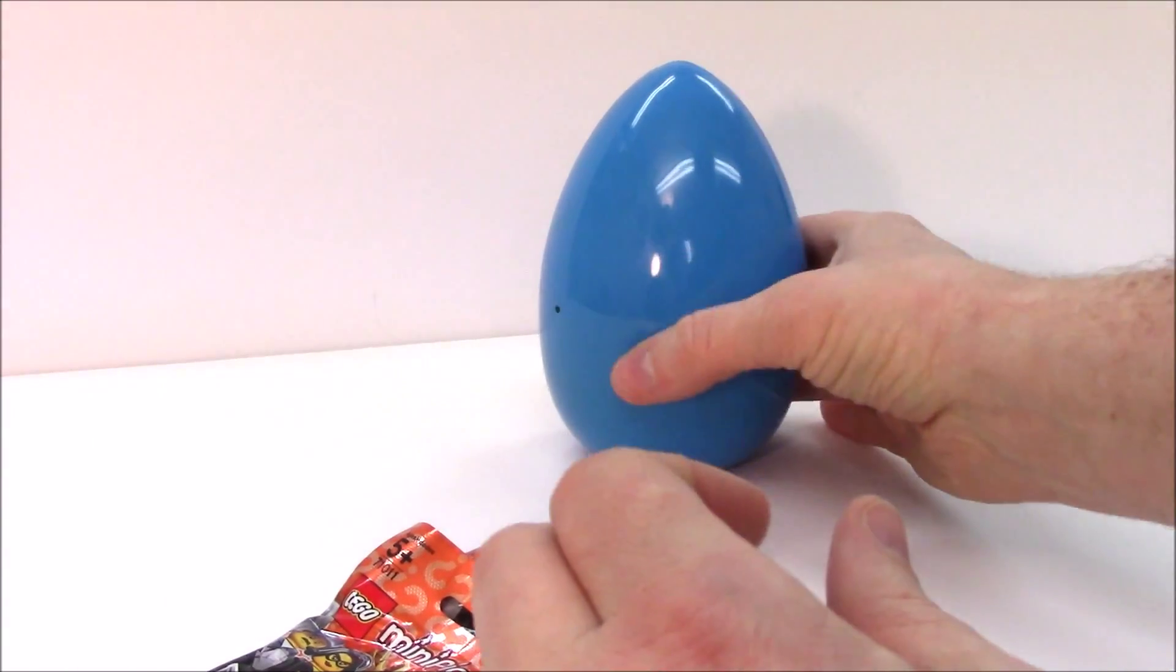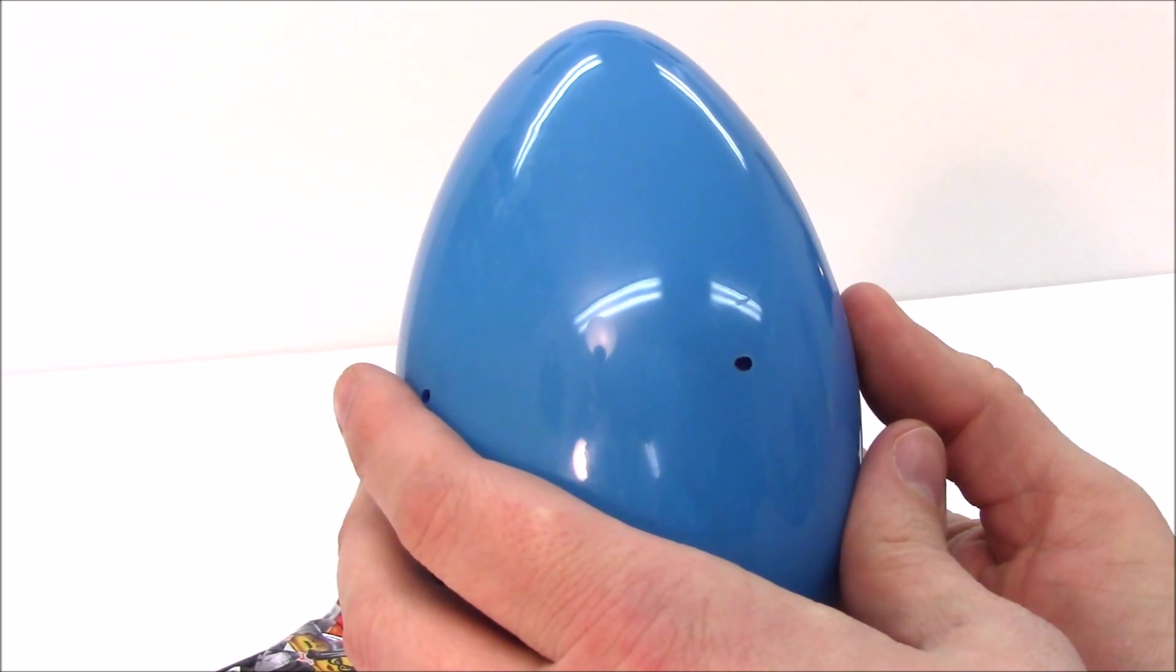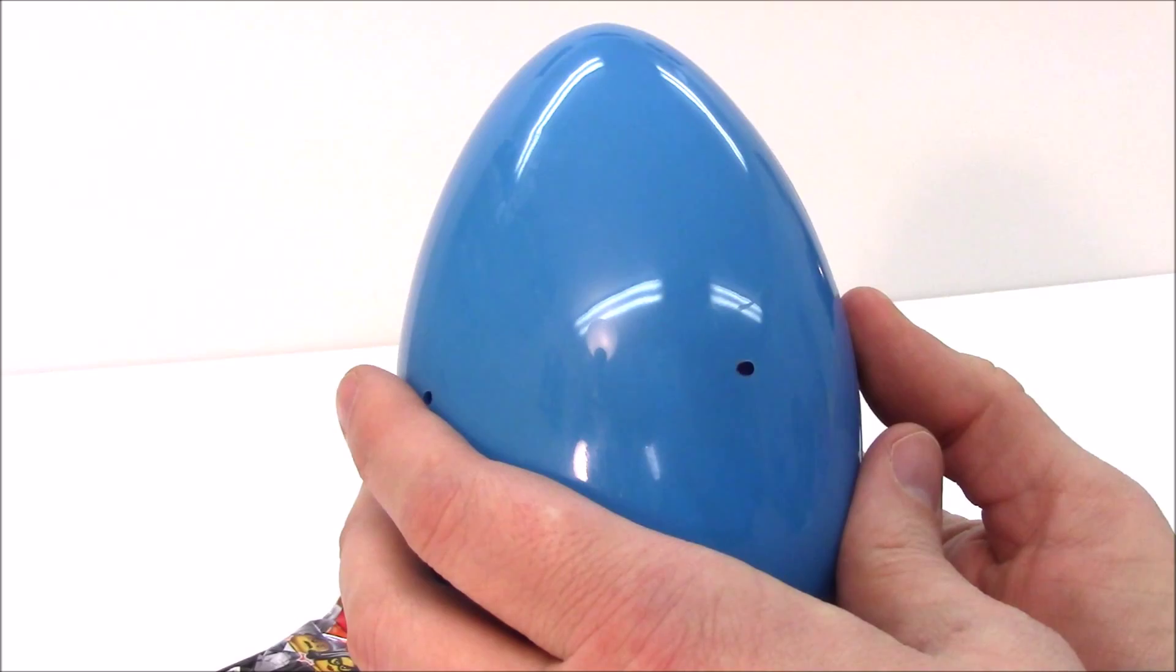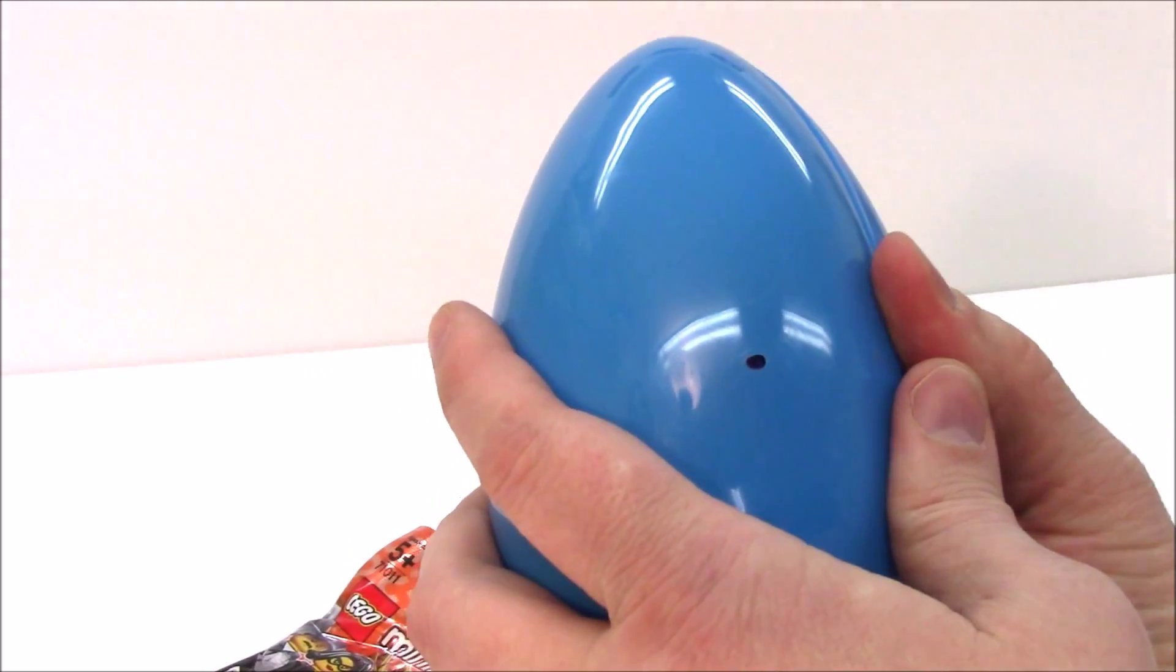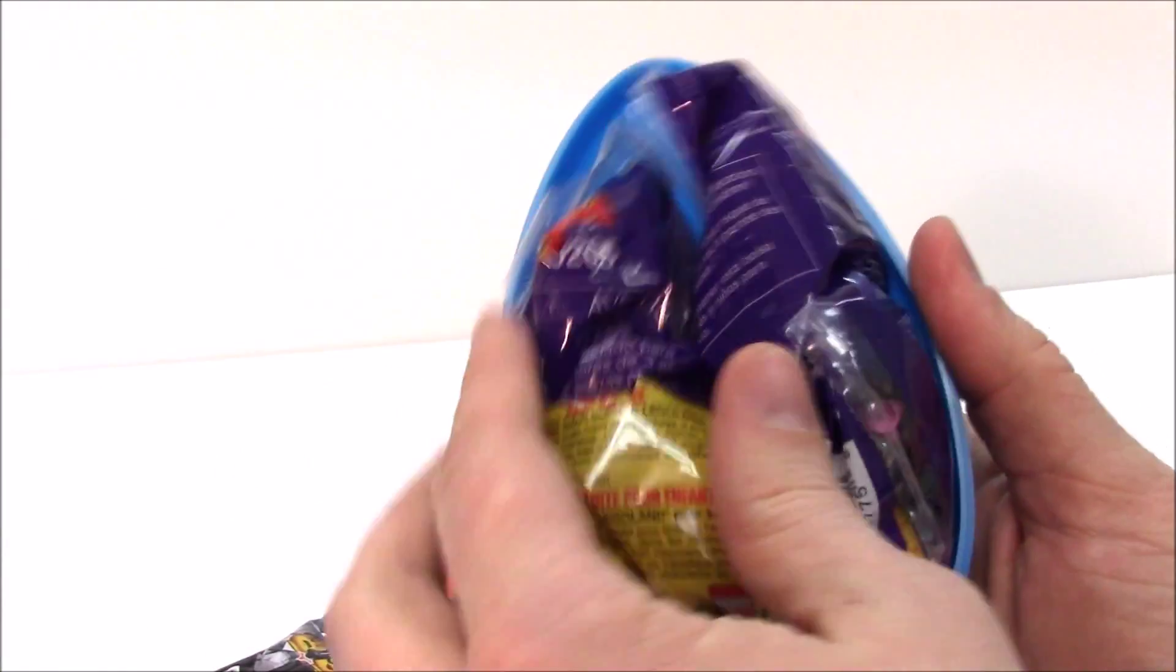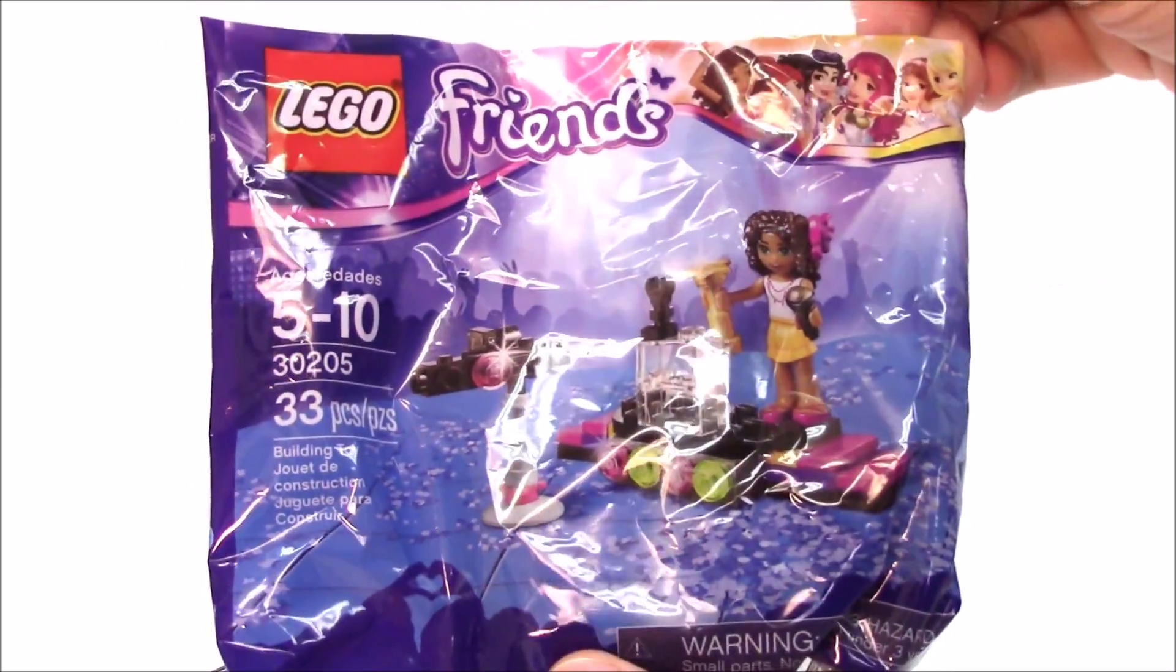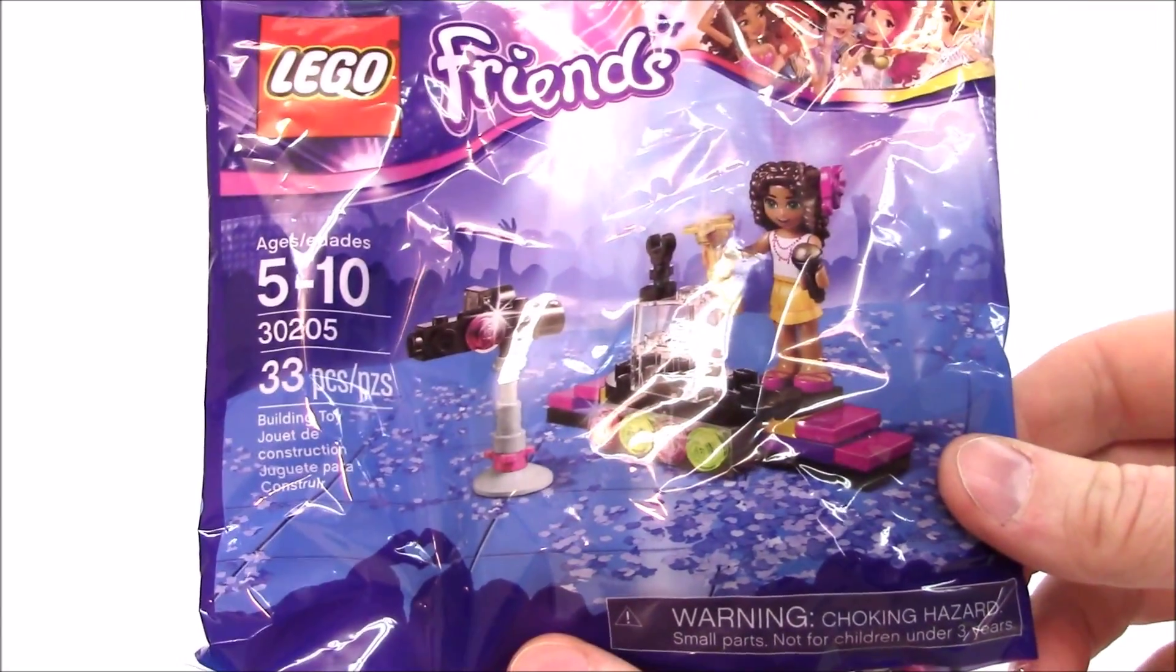And our last one, the blue one. What do you think is in here? Do you think it's another minifigure? Do you think it's a polybag? Who said polybag? I heard you. Maybe. Let's find out. It is a polybag. Let's see which polybag it is. Oh, it's a Friends polybag. That's pretty cool. Well, we're gonna open this one up and build it for you.